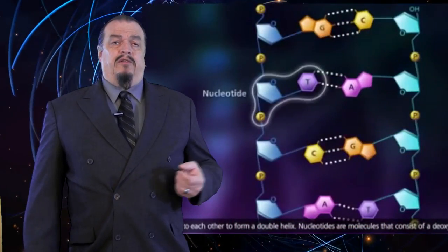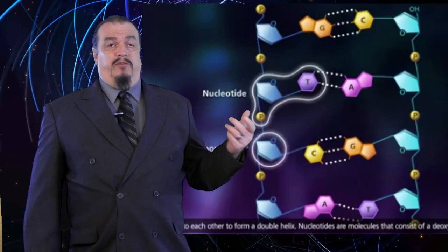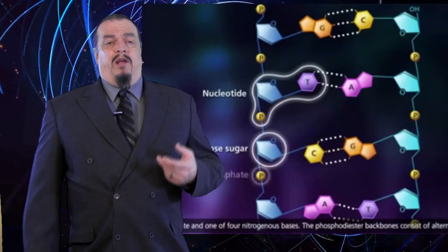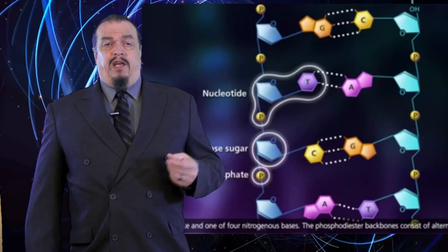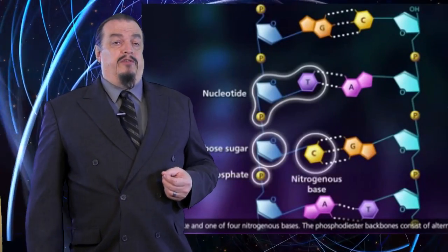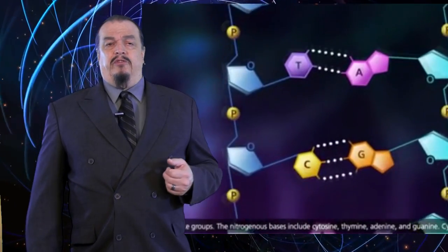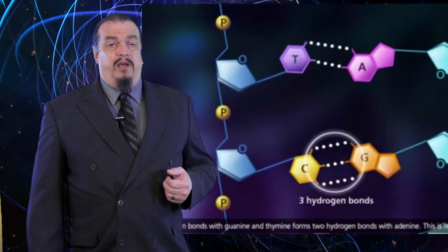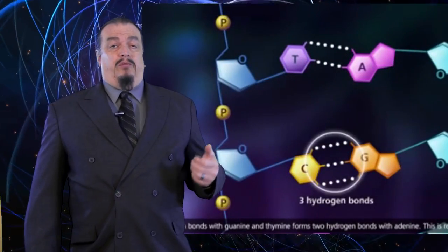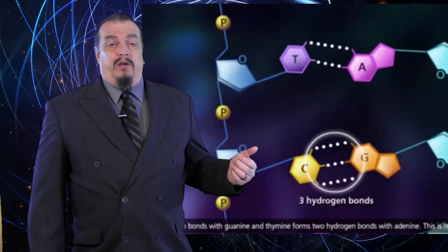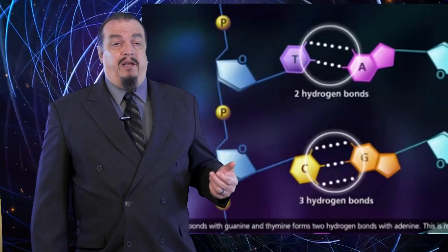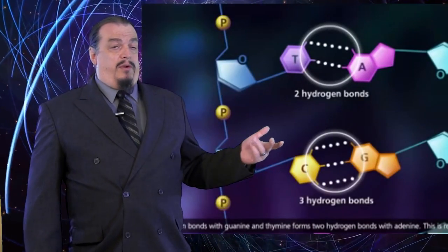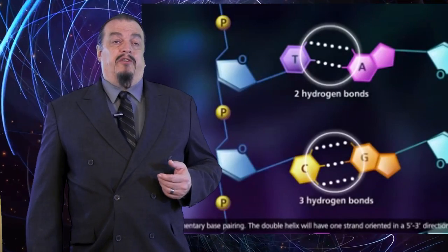DNA is a long chain of nucleotides, being deoxyribose — where DNA gets its name — plus a phosphate and one of four nitrogenous bases. These nitrogen bases will only pair in a specific way: cytosine will only pair with guanine, and thymine will only pair with adenine, and this helps with the replication process.